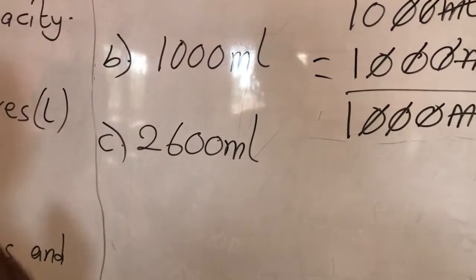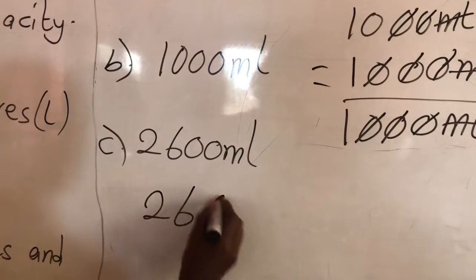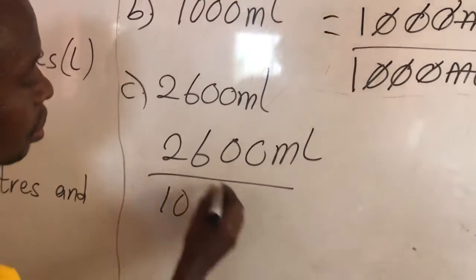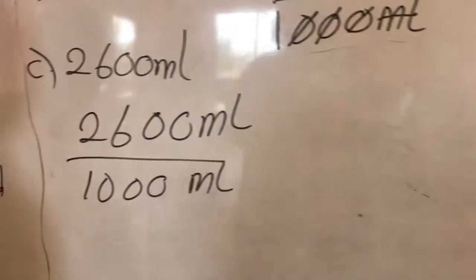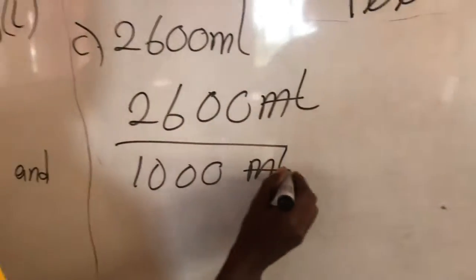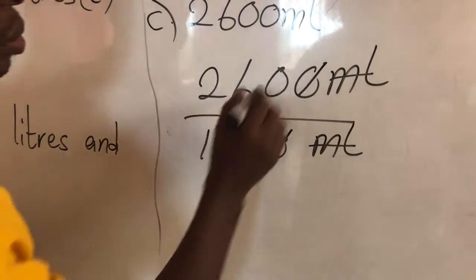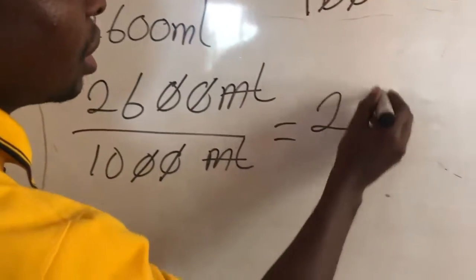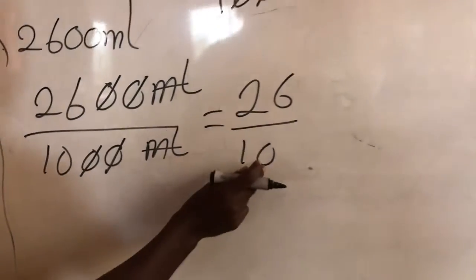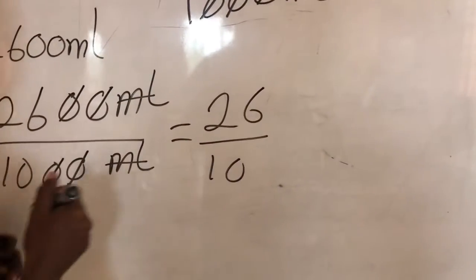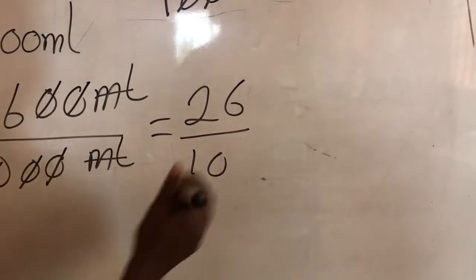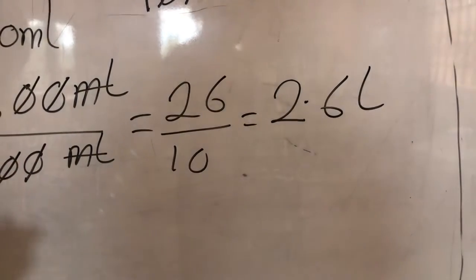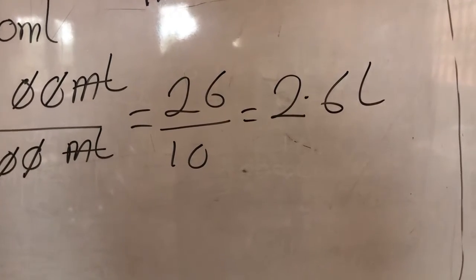The next example is 2600 ml. We divide by 1000 and cancel the zeros: this zero cancels this zero, and this zero cancels this zero. That gives us 26 over 10. In decimal form, 10 goes into 26 two times with a remainder of 6, giving us 2.6 liters.